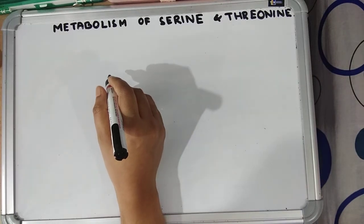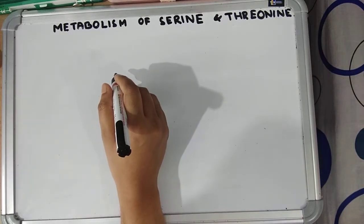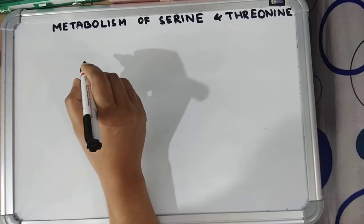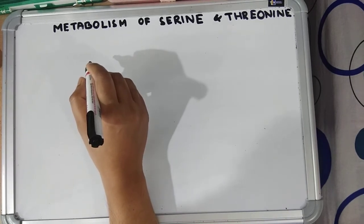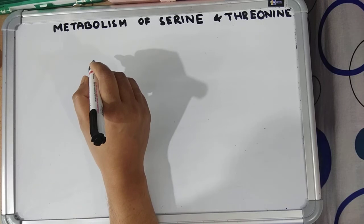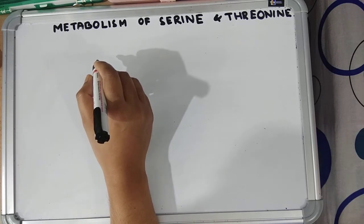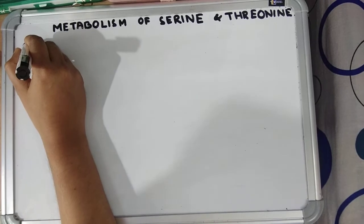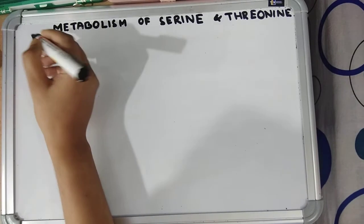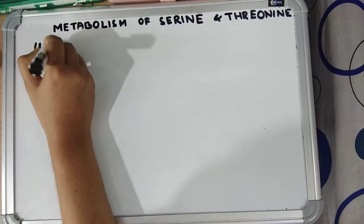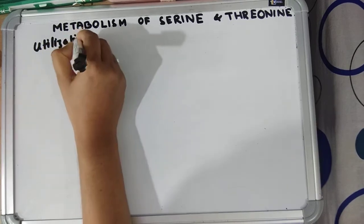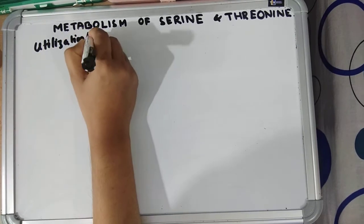Hello students, today's topic is serine and threonine metabolism. Serine is an aliphatic hydroxyl group-containing amino acid, non-essential and glucogenic. I previously discussed the synthesis of serine, so now I will discuss the utilization and function of serine.